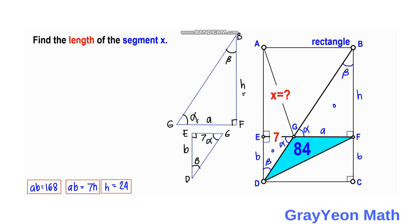Since BF equals H, we can project this value horizontally to the left, meaning AE also equals H = 24. We notice that triangle AEG is a right triangle, so next we use the Pythagorean theorem to find the length of AG or X, which is the hypotenuse of right triangle AGE.